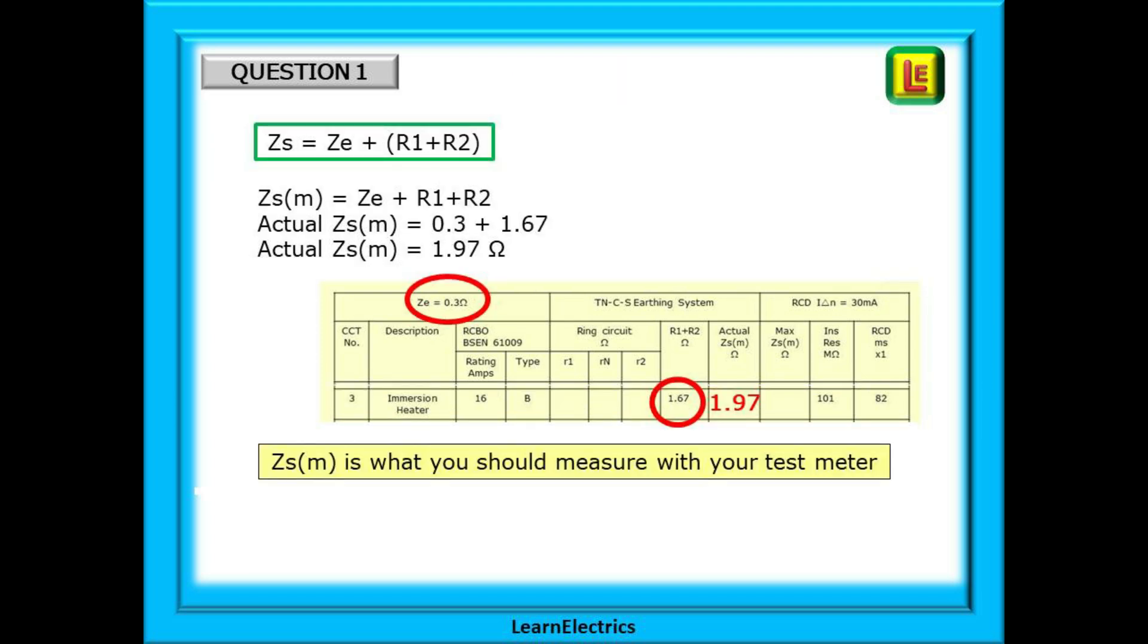To answer this question we will need the formula shown at the top: ZS equals ZE plus R1 plus R2. To calculate the actual ZSM, what the real values are in this circuit, we need ZE which is shown at the top of the chart as 0.3 ohms and R1 plus R2 also from the chart which is 1.67 ohms.